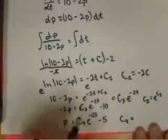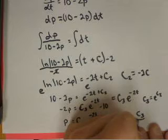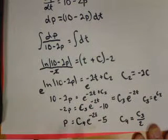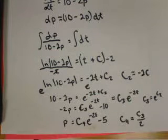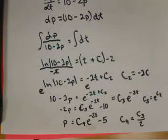Where c4 equals c3 divided by 2. So we have just the one nice constant. It makes it a little easier to deal with when we have our initial condition. And there's our general solution to this differential equation. Thank you.